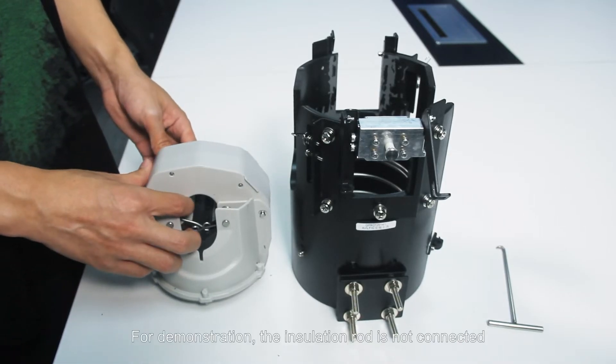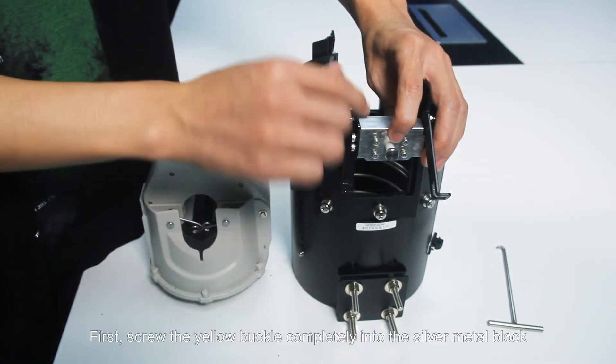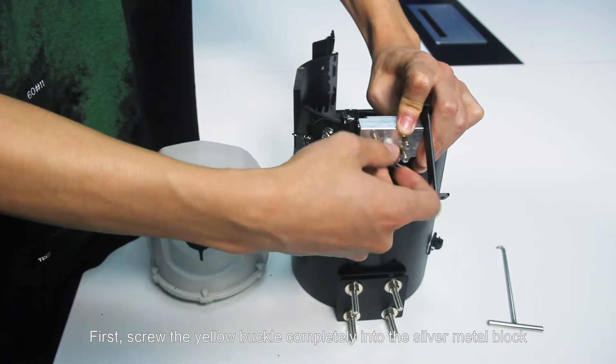For demonstration the insulation rod is not connected. First screw the yellow buckle completely into the silver metal block.